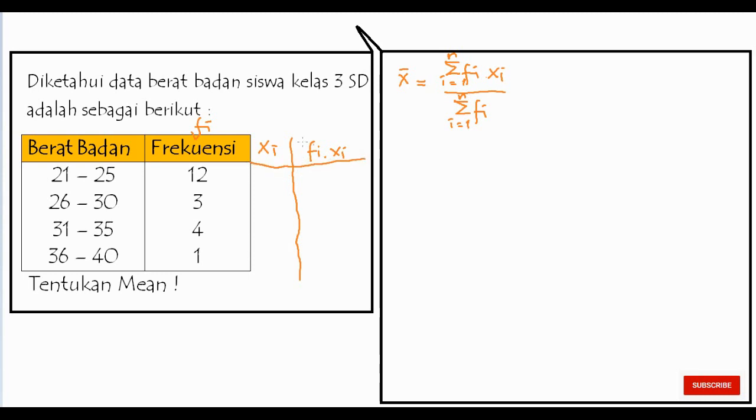Sekarang apa sih XI? XI ini adalah nilai tengah pada kelas, kalau soal ini bentuk data berkelompok, jadi nilai tengahnya. Pada kelas, kita lihat kelas pertama yaitu 21 sampai dengan 25, tengah-tengahnya berapa? Saya tulis di sini, 21, 22, 23, 24, 25. Tengah-tengahnya berapa? Tengah-tengahnya itu berarti adalah 23, maka saya tulis nilai 23 di sini. Jadi nilai tengah dari 21 sampai 25 itu adalah 23.